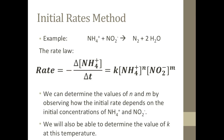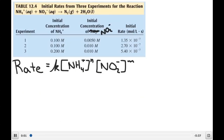We can determine the values of N and M by comparing the rates of experiments in which one reactant concentration has changed while the other remains constant. Then we can substitute in the rates, the concentrations, and the orders so that we can find the average value for K at this particular temperature. Here's the data from three experiments at the same temperature, in which the initial concentrations of ammonium and nitrite were recorded along with the initial rate of the reaction.